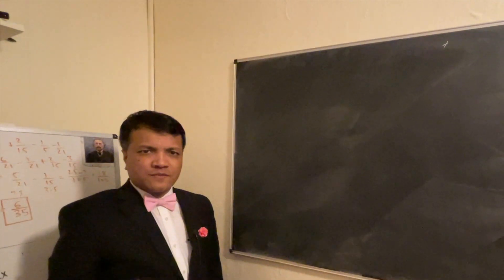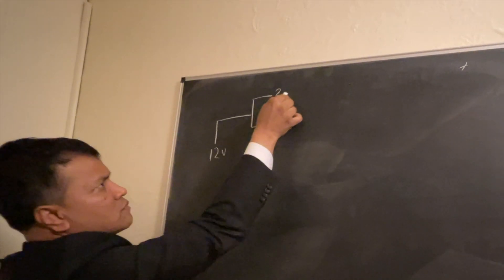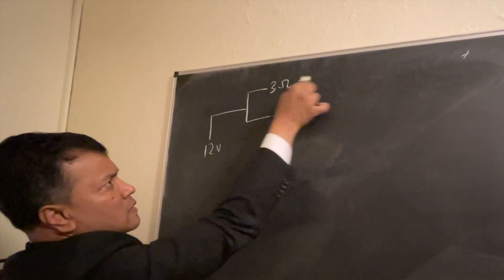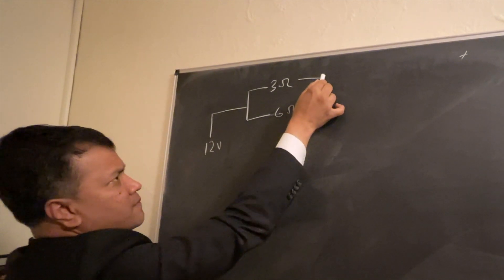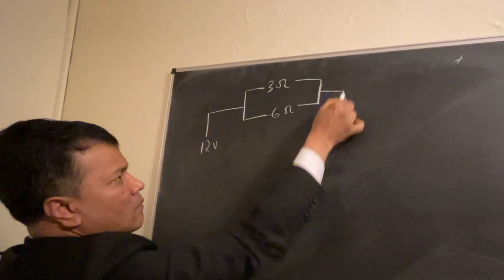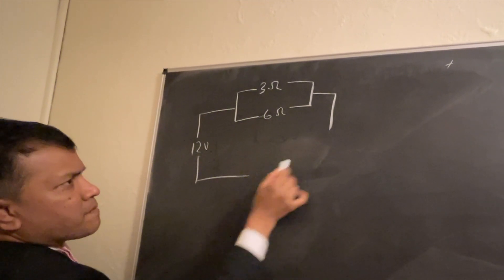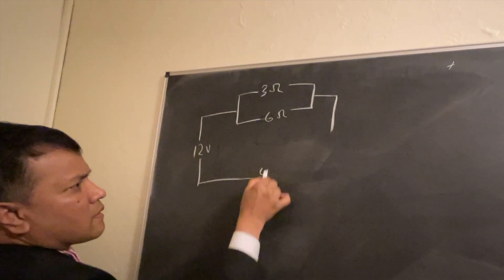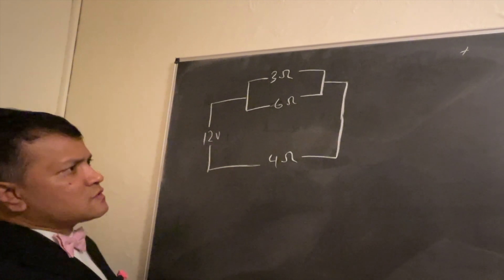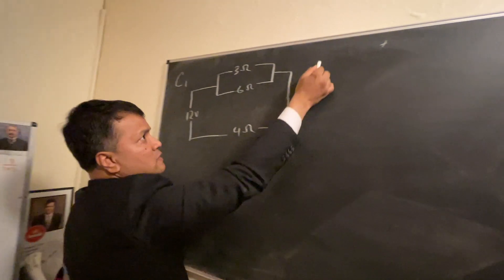In this video I'm going to show you voltage drops in a complex circuit. We have three ohms and six ohms in parallel. Let's consider another four ohms resistor. Now we're going to decompose it to circuit two.